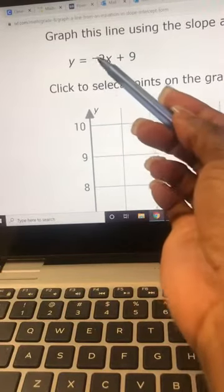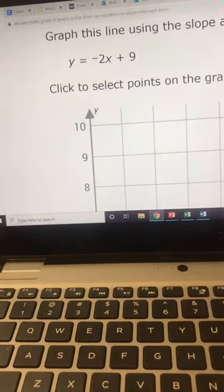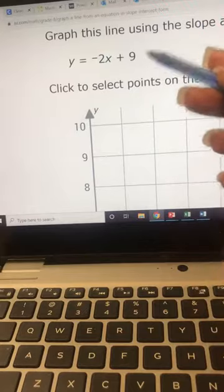For this example, we have y equals negative 2x plus 9. So please write that on your paper. Circle the plus and the 9. That is our y-intercept.